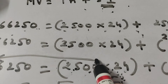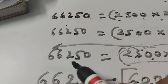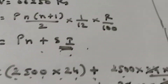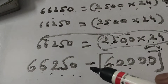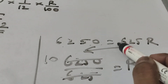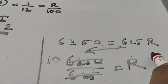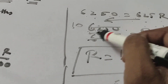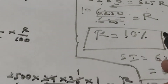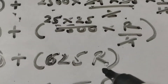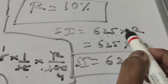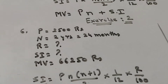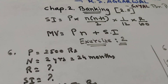Taking 60,000 to the other side, it becomes minus. So 66,250 minus 60,000 equals 625r. After subtracting, we get 6,250 equals 625r. Dividing both sides by 625 gives us r equals 10, so r is equal to 10 percent. We still need SI — we know it is 625 × r, so SI equals 625 × 10 equals 6,250 rupees. I hope you understood this sum. Question number 7 is also a similar sum — we will do it afterwards. Thank you very much.